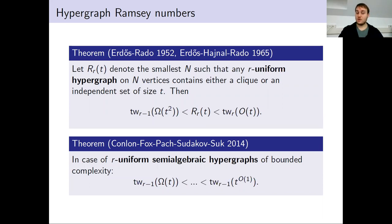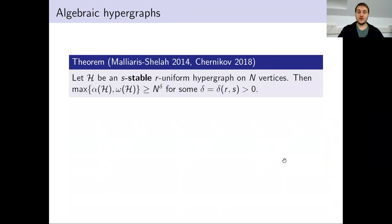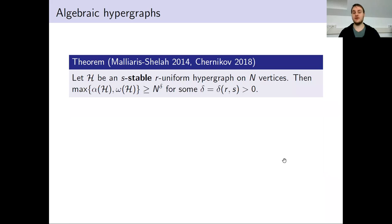What happens for algebraic hypergraphs? It turns out their behavior is very different from all of these. For R-uniform algebraic hypergraphs, we can always find polynomial-sized cliques and independent sets. This follows from a result of Maliaris and Shelah, which was also given a simpler proof by Chernikov and Starchenko.